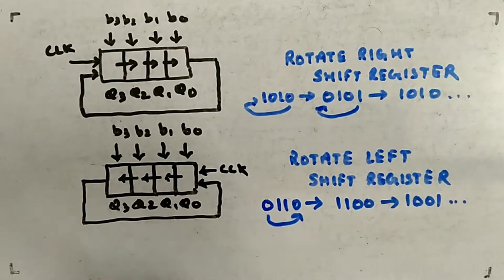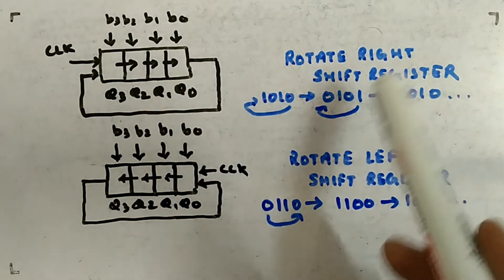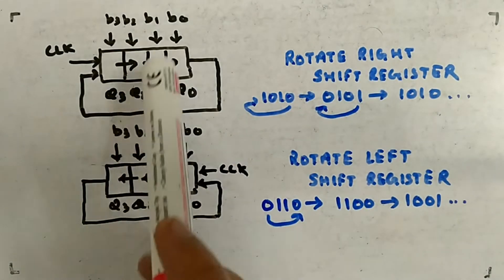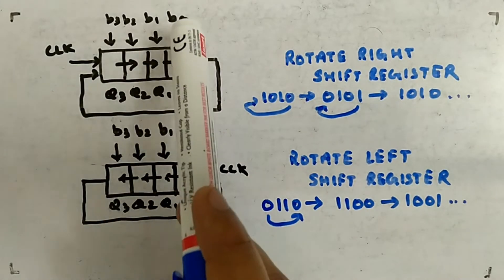Let's look at another type of shift register which I forgot: rotate right and rotate left shift registers. This is how they will look. You can see this is the shift register representation - b3, b2, b1.